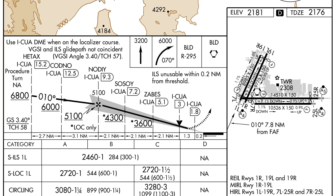The initial missed approach climb is shown by a dashed line curved upwards. On a precision approach, the dashed line begins approximately at the decision altitude. On a non-precision approach, the dashed line will begin at the missed approach point. This line is standard on every approach and does not accurately define the climb path necessary.